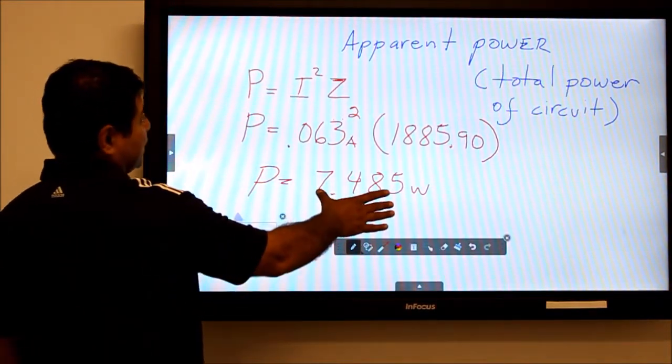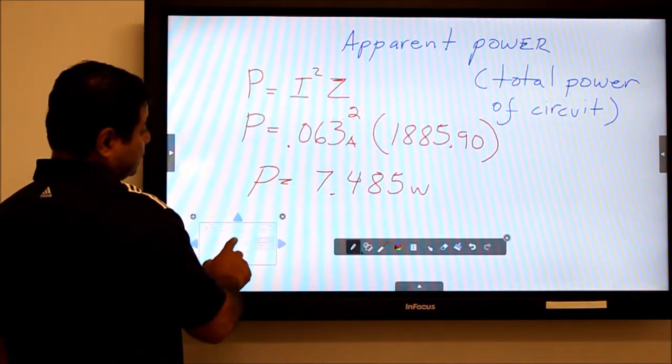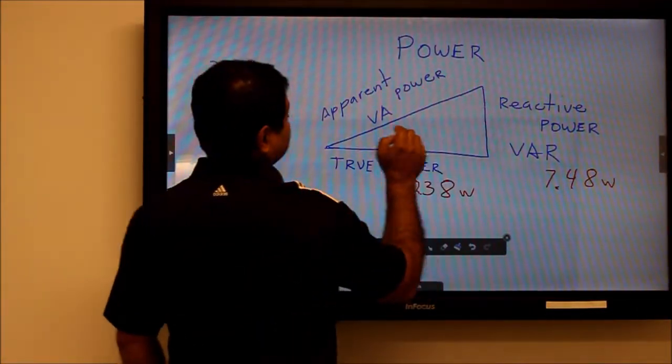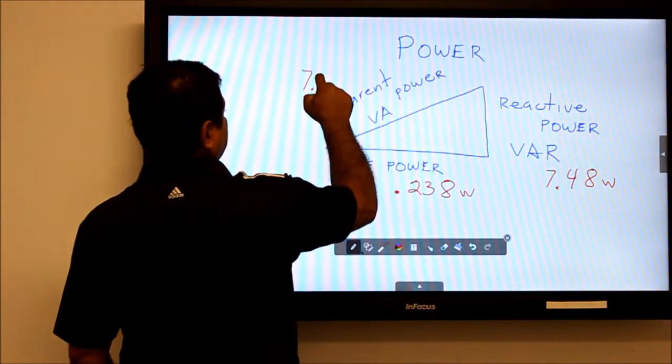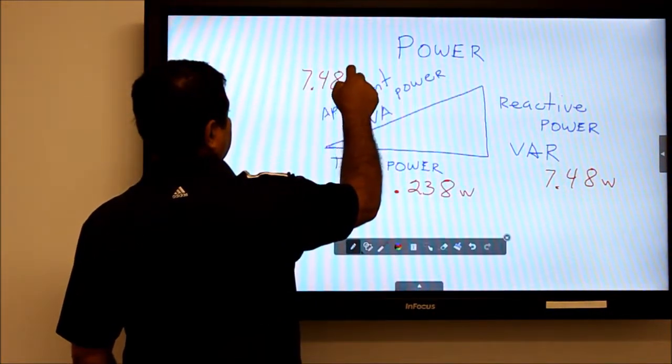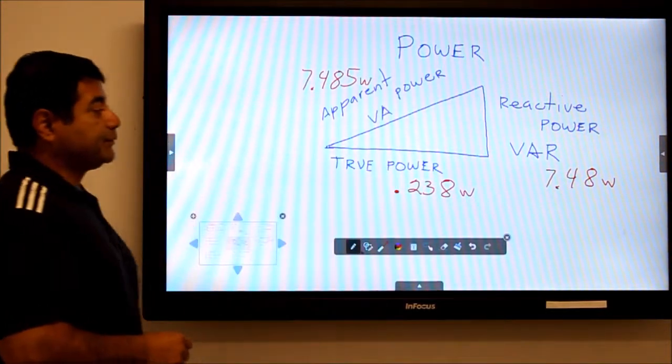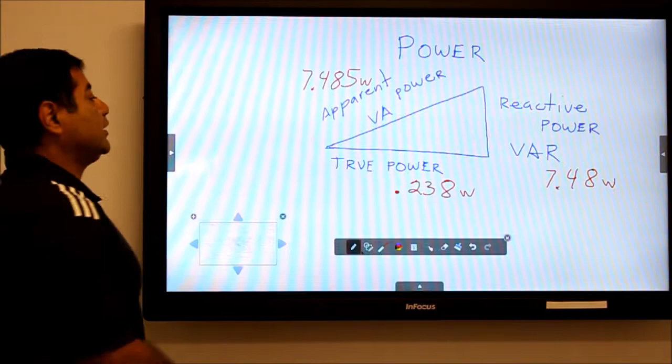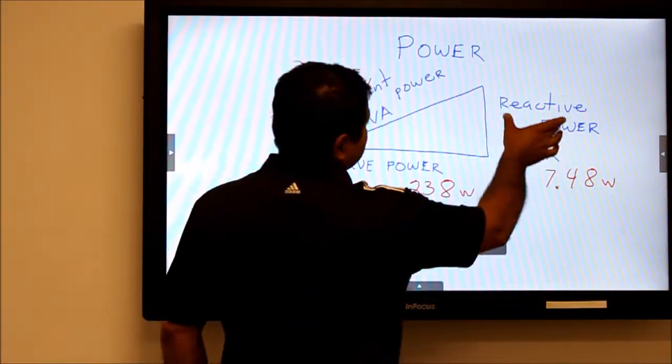This is the value of my apparent power, which I can now substitute into my triangle. Now I have all three values: the apparent power, the true power, and the reactive power.